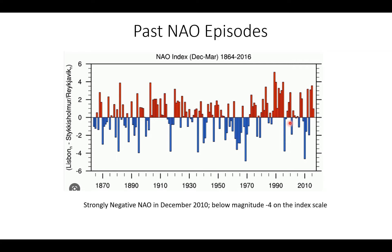Here are some of the past NAO episodes. The red vertical bars indicate positive phases of the NAO, and the blue vertical bars indicate negative phases. The last really major negative phase NAO around this time of year occurred back in December of 2010. If you look at December 2010, look how far down this blue vertical bar dips — below a magnitude of negative 4 on this particular NAO index scale. A sharply negative NAO in that particular December. But for the most part, since around 1990, we've seen a lot more positive phases to the NAO.